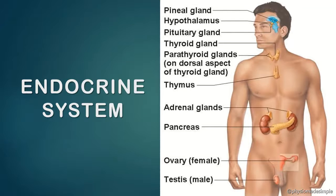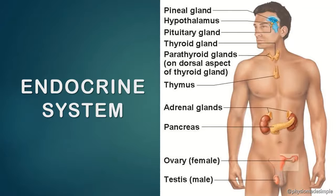Next comes the hypothalamus, which is the master coordinator of all endocrine glands. Then comes the pituitary gland, divided into the anterior pituitary and posterior pituitary. Next are the parathyroid glands, followed by the thymus.